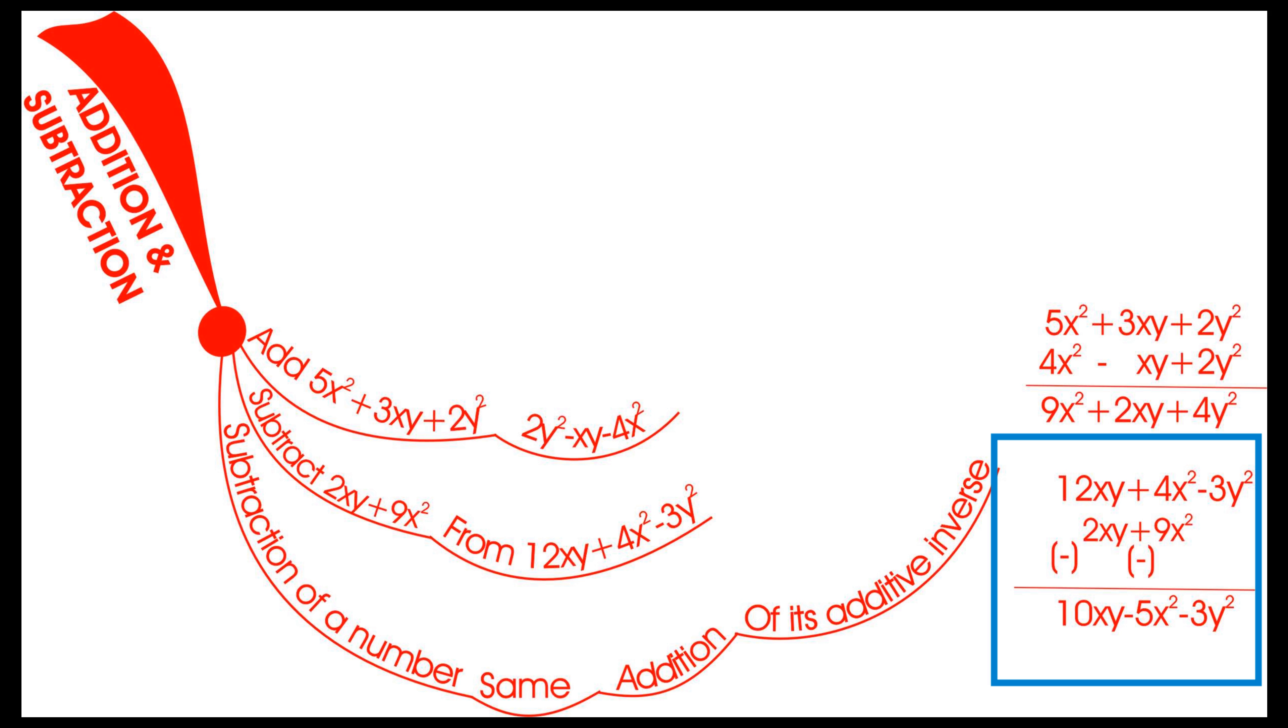Write the expression being subtracted below the expression from which it is being subtracted, aligning like terms in columns. So 12xy + 4x² - 3y² subtracted 2xy + 9x² gives us 10xy - 5x² - 3y².